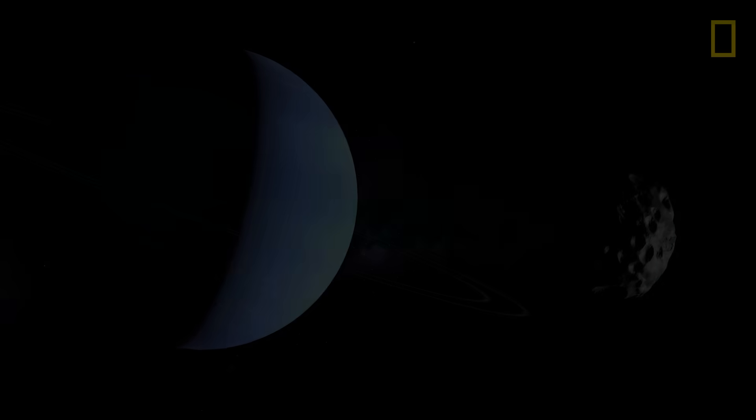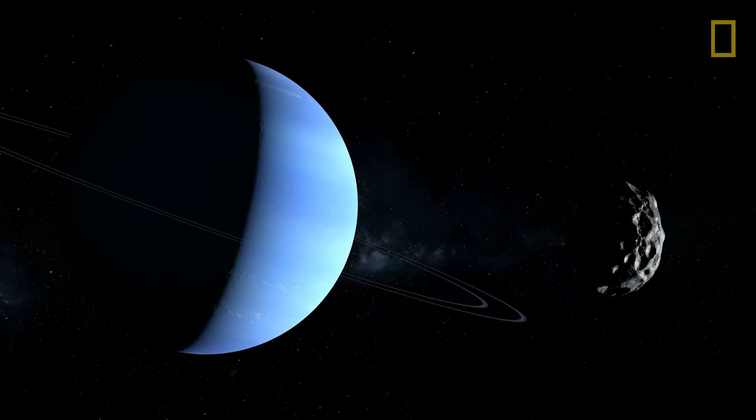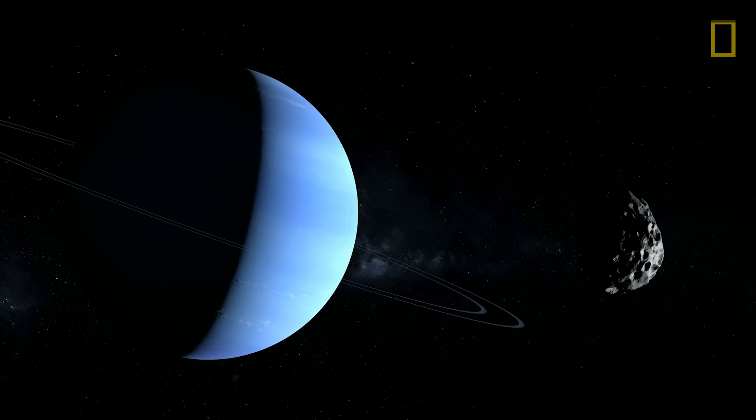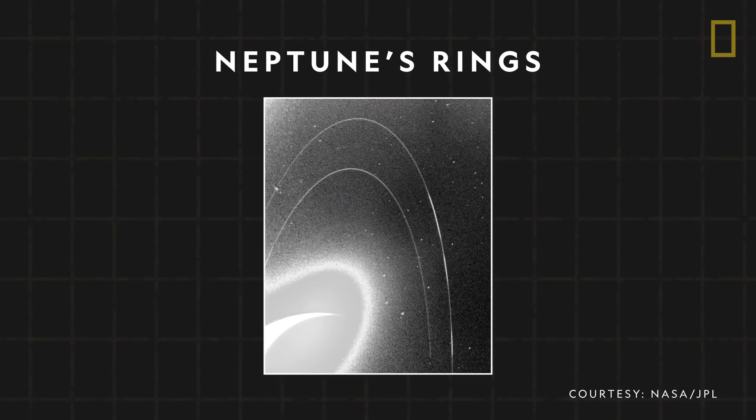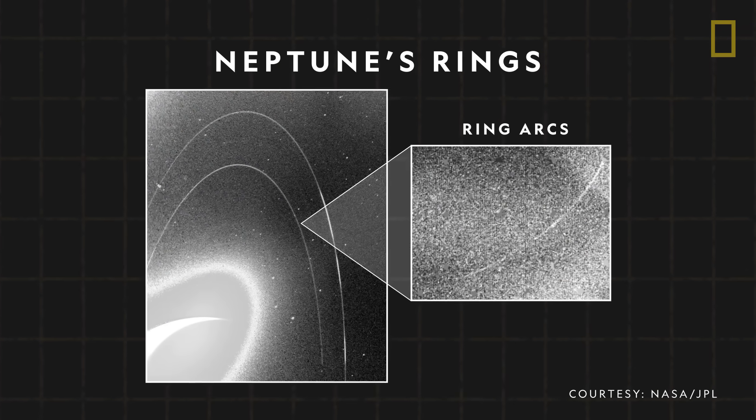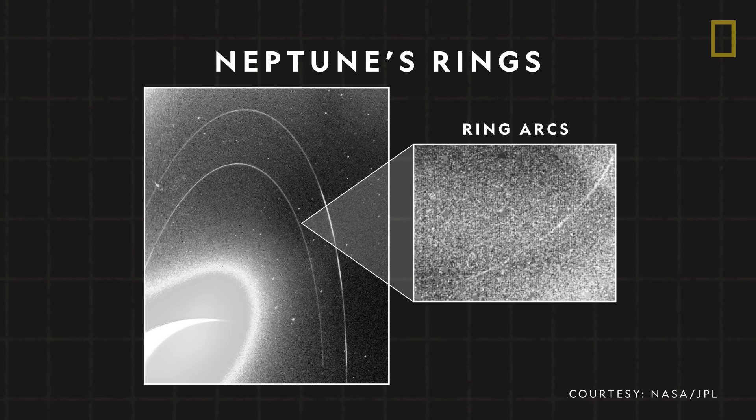Drifting high above this windy ice giant is a quiet ecosystem of rings and satellites. Six rings encircle the planet, with some containing ring arcs or clusters of dust particles in a ring.